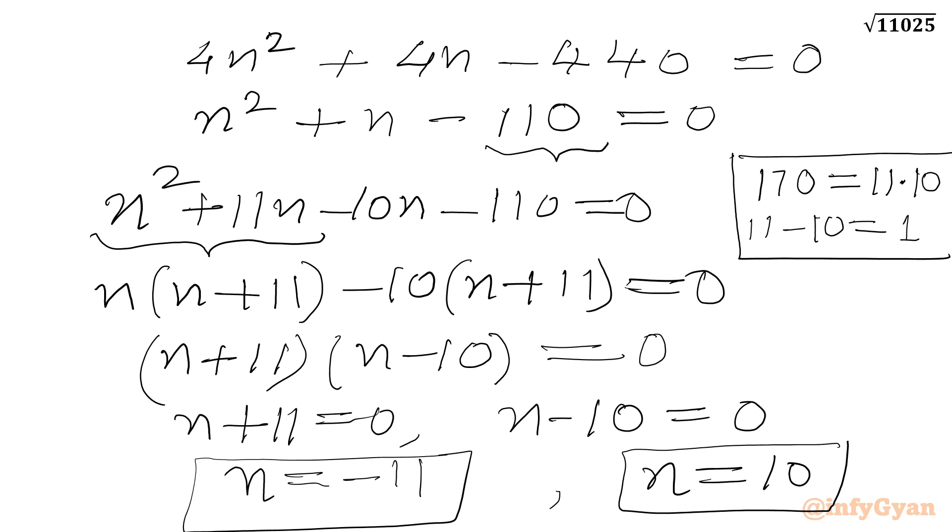Condition on n was n must be greater than 0. So minus 11 will be rejected and 10 will be accepted.